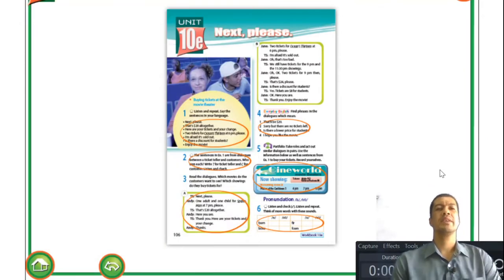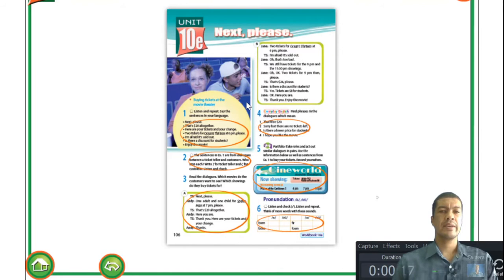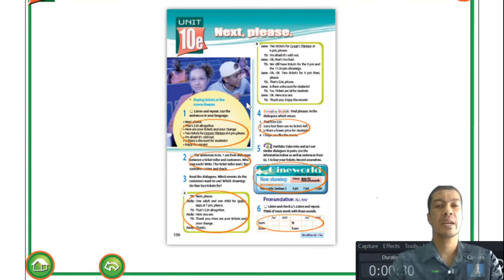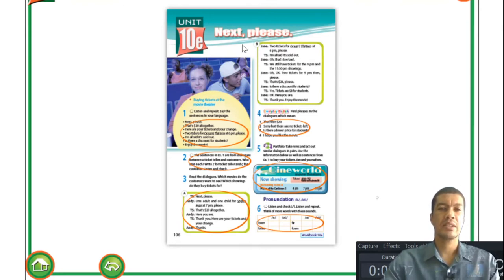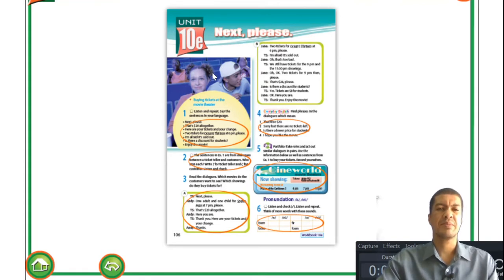Welcome back to Unit 10e. Today's topic is 'Next Please.' Looking at the image, it's a movie theater - you can see a girl and a boy, and some customers or audiences at the back watching a movie. It's a little bit empty while they're watching.